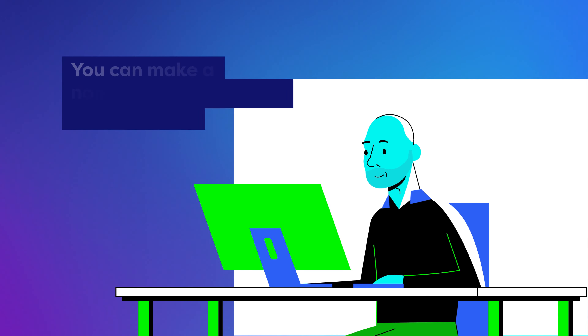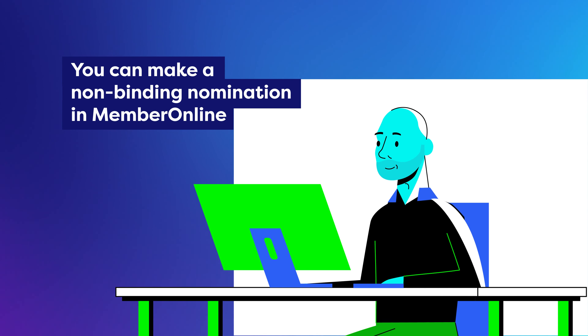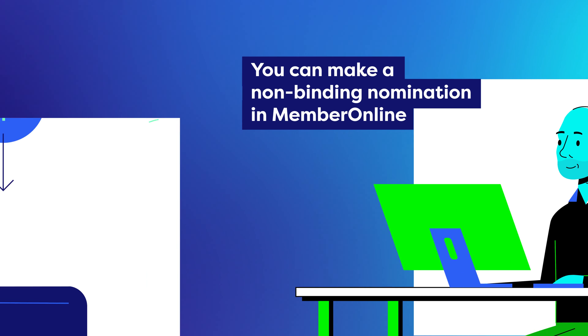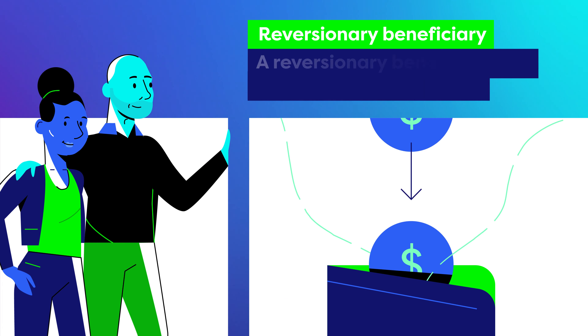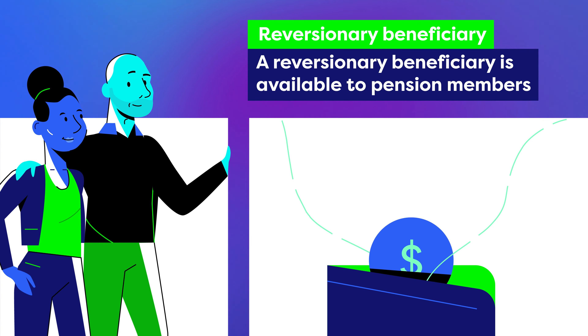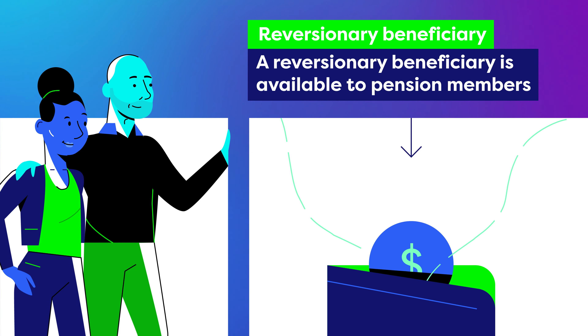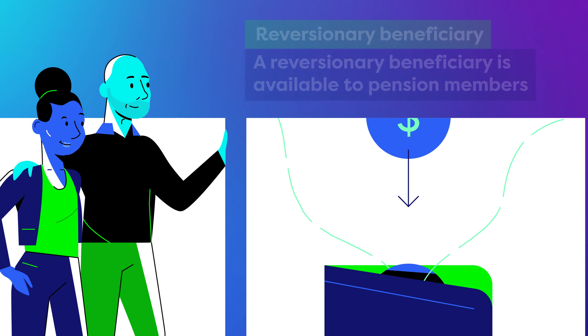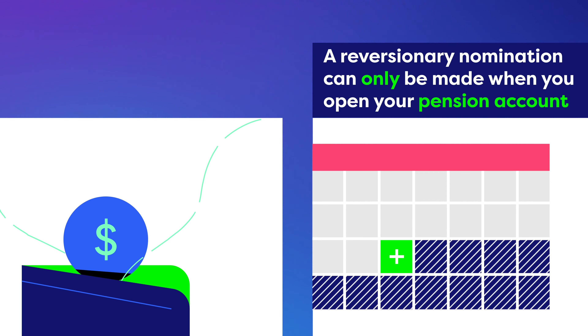You can make a non-binding nomination in member online. A reversionary beneficiary is available to pension members and means your income stream will continue to be paid to your beneficiary after you pass away. This nomination can only be made at the time you open your account.